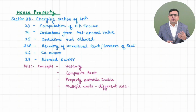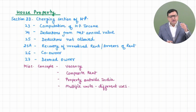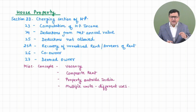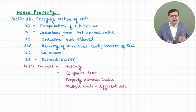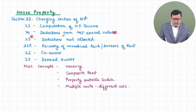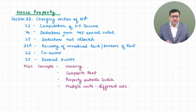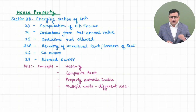Whenever we compute our house property income, first we calculate our GAV (gross annual value), then we subtract municipal taxes paid, then we receive NAV, and from NAV there are deductions available under Section 24. Section 24 provides the deductions available from your net annual value — two deductions: 24A and 24B.